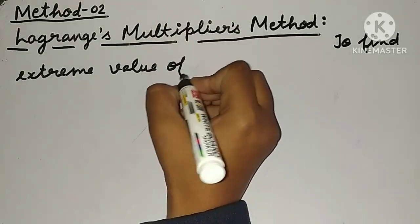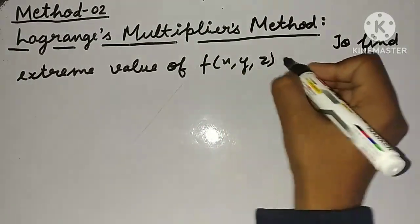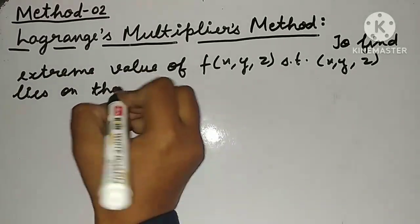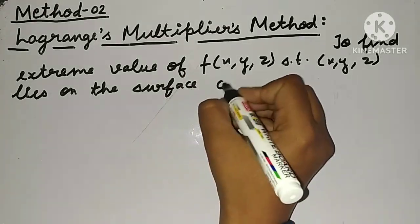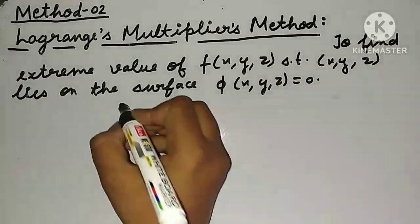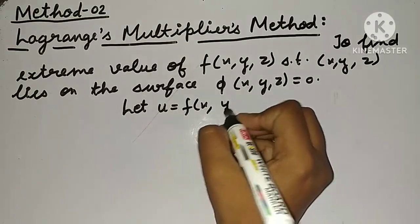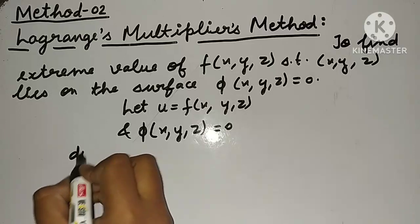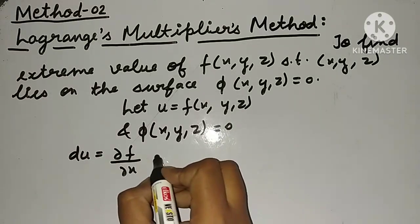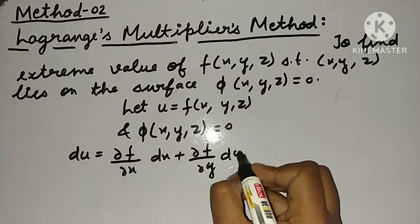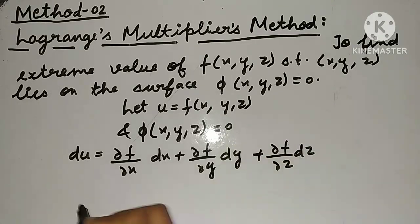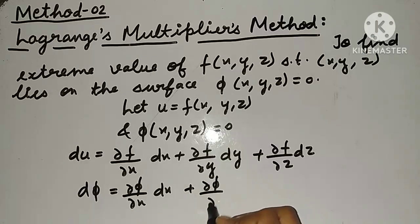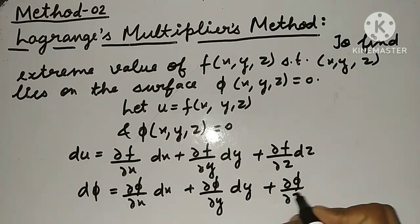We want to find the extreme value of f(x, y, z) such that (x, y, z) lies on the surface φ(x, y, z) = 0. Let u = f(x, y, z) and φ(x, y, z) = 0. Then du = (∂f/∂x)dx + (∂f/∂y)dy + (∂f/∂z)dz, and dφ = (∂φ/∂x)dx + (∂φ/∂y)dy + (∂φ/∂z)dz.